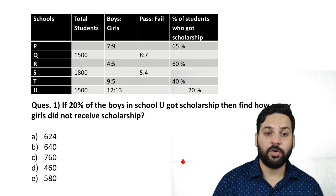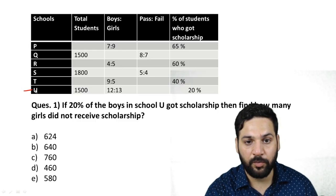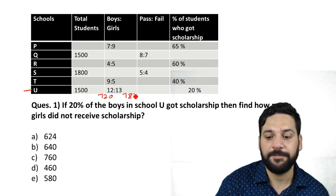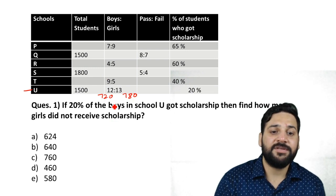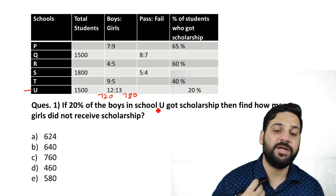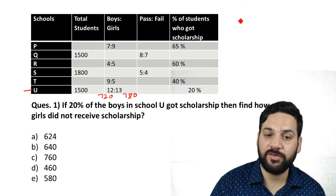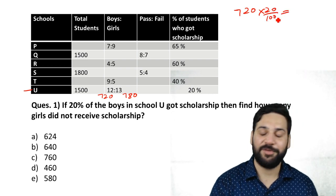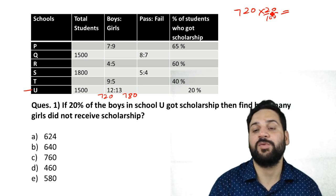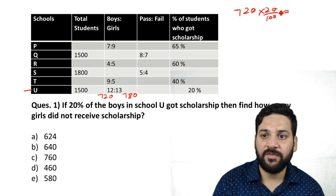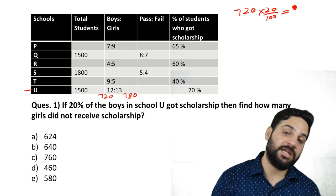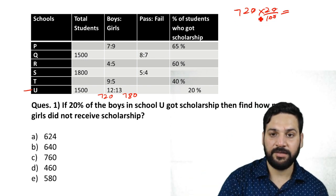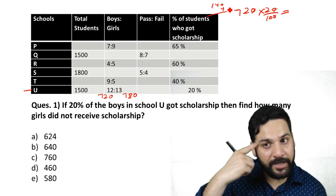Question 1: For school U, we've already calculated 720 boys and 780 girls. If 20 percent of the boys in school U got the scholarship, what is 20 percent of 720? Just do 72 multiplied by 2 in your mind: 7×2=14, so 140; 2×2=4, so 144. Therefore 144 boys got the scholarship.